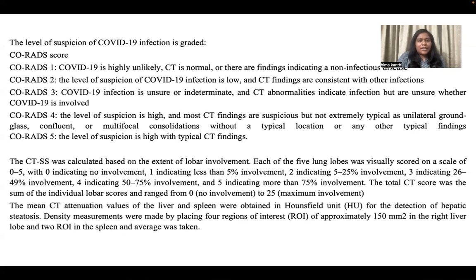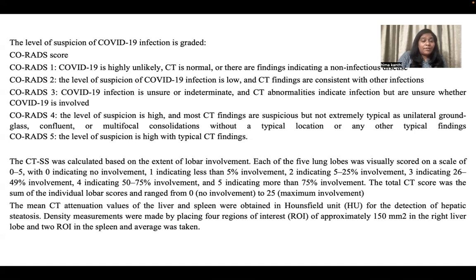CO-RADS 1: COVID-19 is highly unlikely; CT is normal or shows findings indicating a non-infectious disease. CO-RADS 2: low suspicion; CT findings are consistent with other infections. CO-RADS 3: indeterminate; CT abnormalities indicate infection but it is unsure whether COVID-19 is involved. CO-RADS 4: high suspicion with findings such as unilateral ground glass opacities or confluent/multifocal consolidations without typical location. CO-RADS 5: high suspicion with typical CT findings. The CT severity score was calculated based on the extent of lobe involvement.